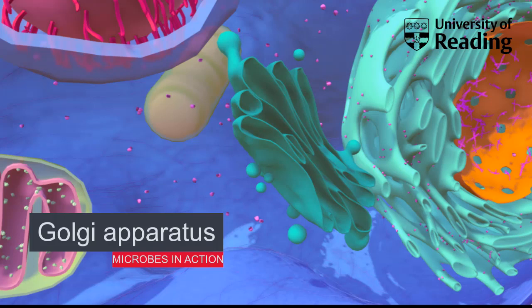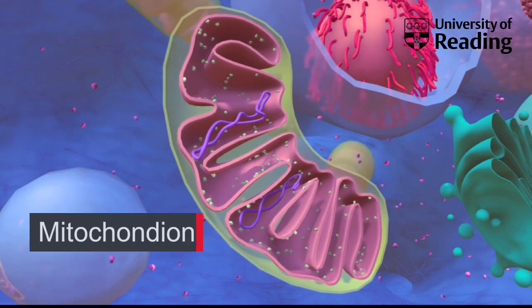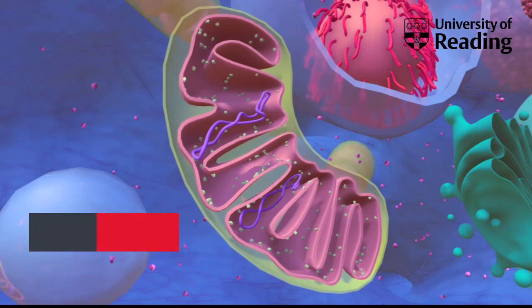The Golgi apparatus is also involved in protein modification, exocytosis, and lysosome formation. Mitochondria are membrane-bound organelles often referred to as power generators because they produce adenosine triphosphate, or ATP, the major energy storage chemical. The inner mitochondrial membrane is embedded with the components of the respiratory electron transport chain and is highly folded into cristae. The inside of the mitochondrion is filled with a gel-like matrix and contains several copies of the mitochondrial DNA genome, mitochondrial ribosomes, and many other enzymes involved in respiration.